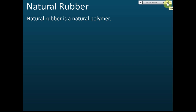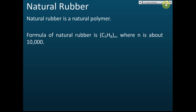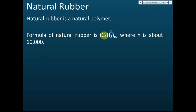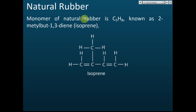Natural rubber is a natural polymer. The formula of natural rubber is C5H8, and n means it repeats n times — that is the way we write the formula for a polymer. This structure repeats for n times, written as (C5H8)n, where n is about 10,000. So this is a very, very long chain polymer.